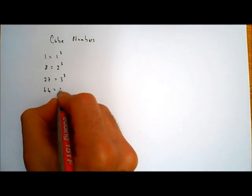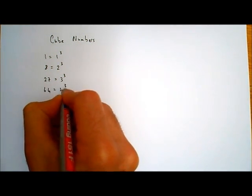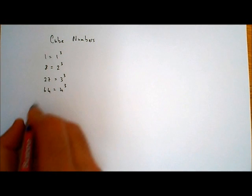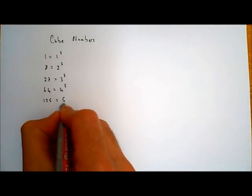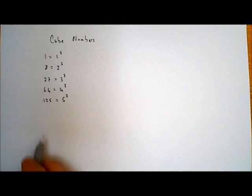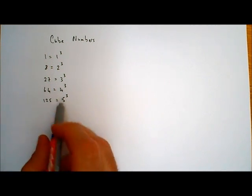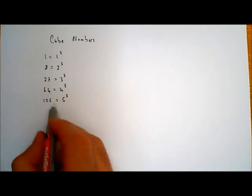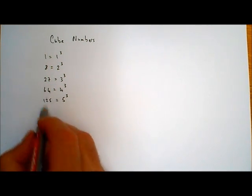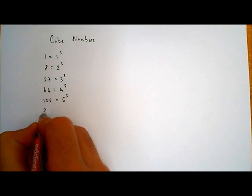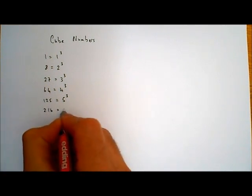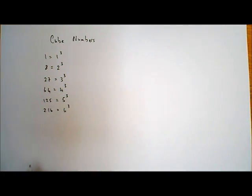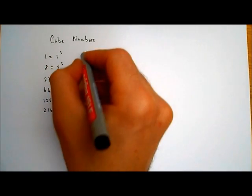These are all the positive cube numbers. So 64 is the same as 4 cubed. I could go on: 125 is a cube number because 125 is 5 cubed. These are the numbers that can be written as something cubed — they're called the cube numbers. The next one, 216, is equal to 6 cubed.